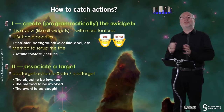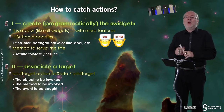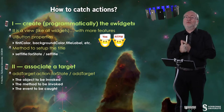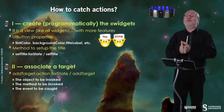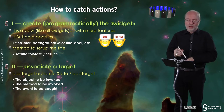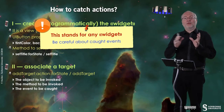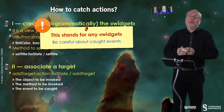In Swift, it's just called addTarget with the corresponding parameters. The first parameter is the object to be invoked — it's a reference to this object, so this object will support the method you invoked, which is the second parameter. And the third parameter is the event to be caught by the widget. This stands for any widget — I just give a particular case of a UIButton here.